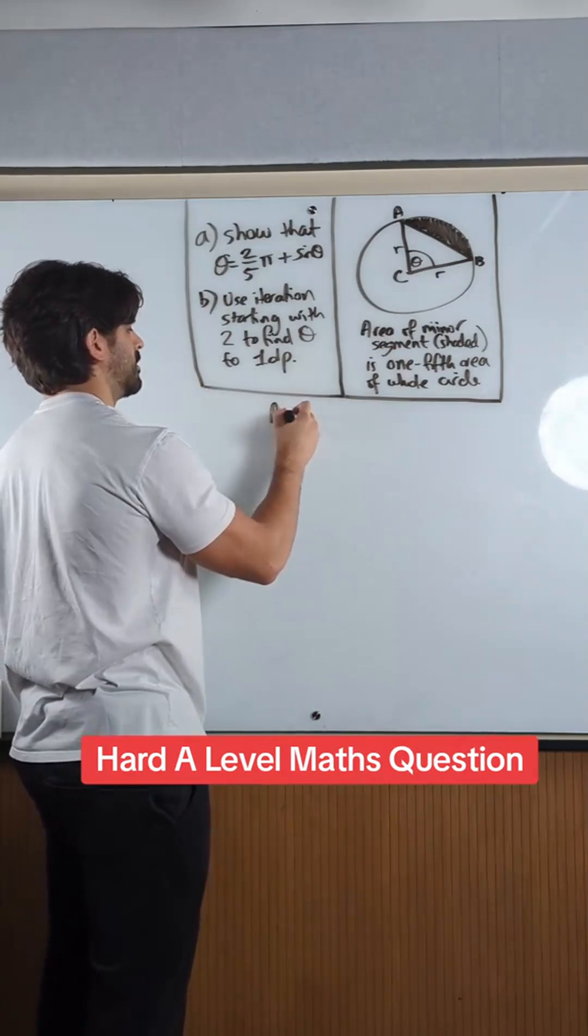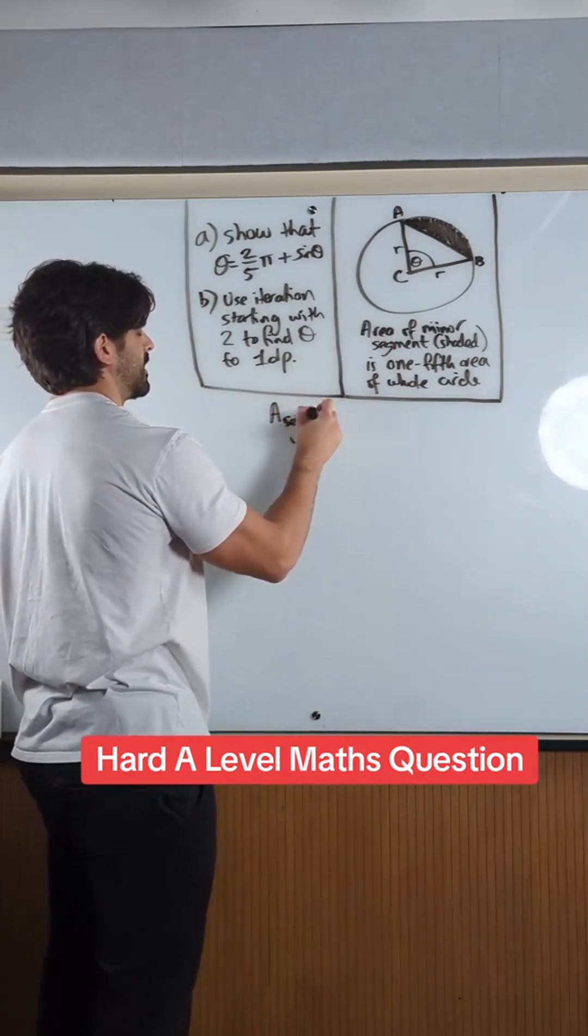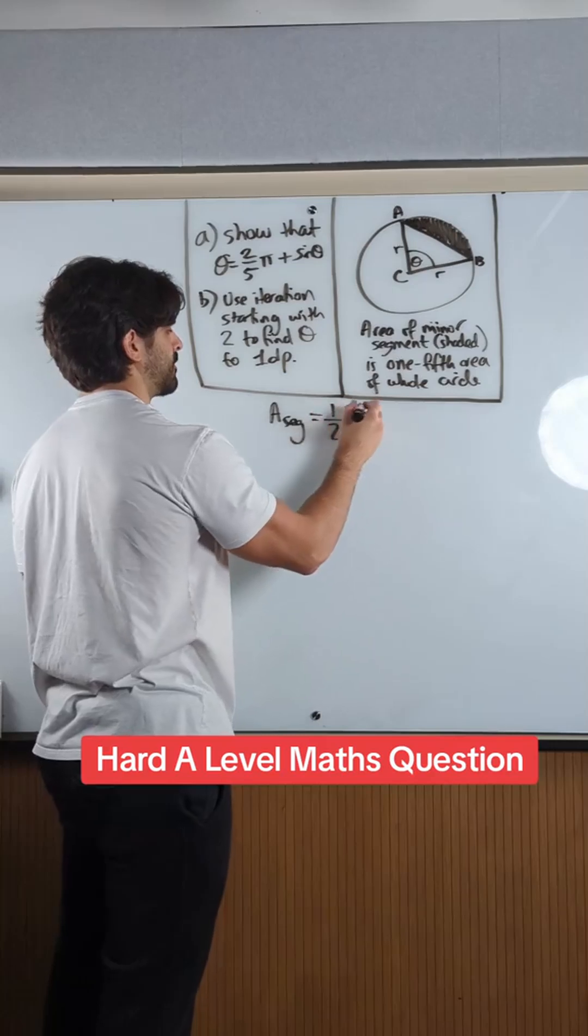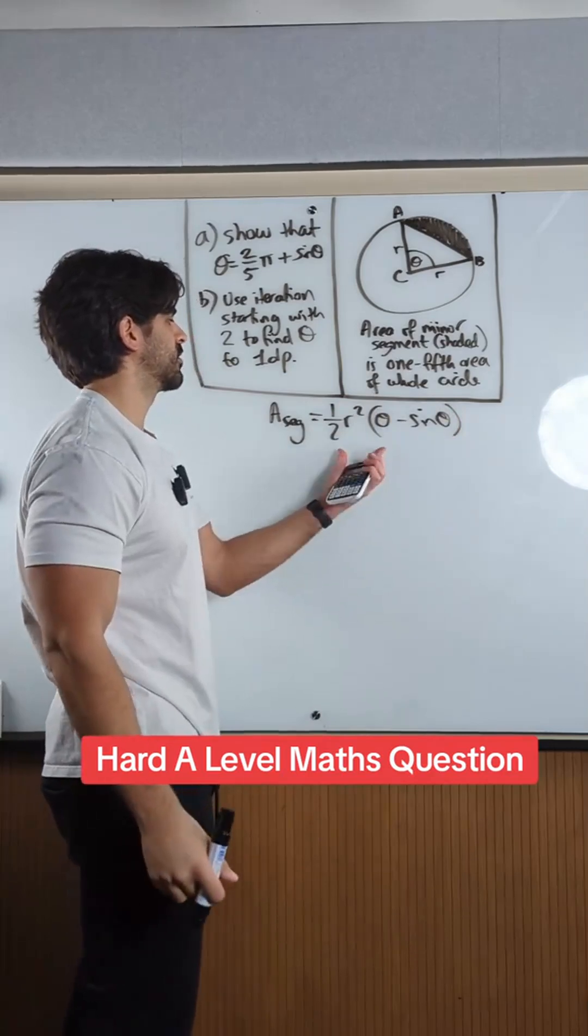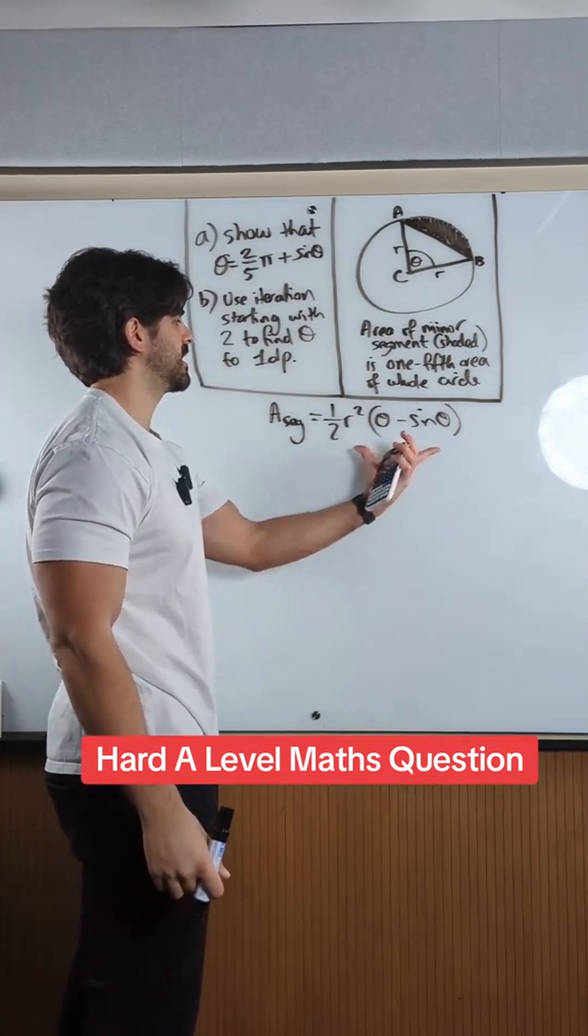You should know what the area of a segment is. The area of a segment is half r squared theta minus sine theta. That's obvious, it's just the full sector minus the area of a triangle.